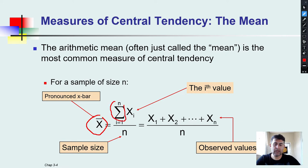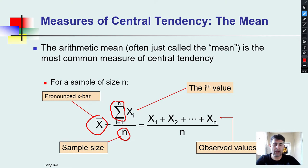We also have sigma, which is a summation notation from Greek, and n, which is the sample size — how many samples we have. For instance, if we have a sample data with size n, for example 10, 20, 30 observations, n tells us the count of those observations.